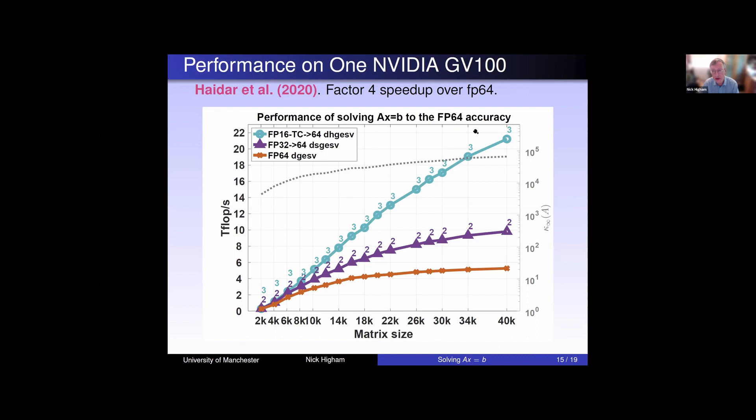The original GMRES-based IR has been implemented in MAGMA now from ICL, and this is also in the NVIDIA cuSOLVER library. And just to give you one example, this is on a single GPU on an NVIDIA GV100 with problem size up to 40,000. So we're solving x equals b either in double precision, giving the teraflop rate indicated by the orange line, but with the refinement using half precision on the GPU and the tensor cores, then you get about a factor four speed up for the largest problem sizes. And in complex arithmetic, that becomes a factor five.